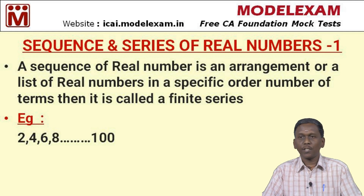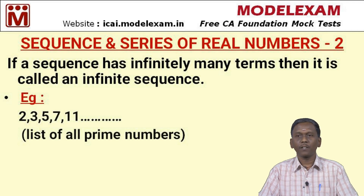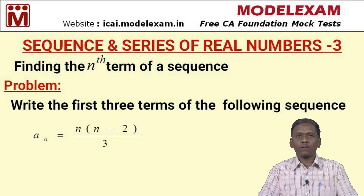If a sequence has infinitely many terms, it is called an infinite sequence. For example, 2, 3, 5, 7, 11 — the list of all prime numbers — is never ending, so this sequence is called an infinite sequence.